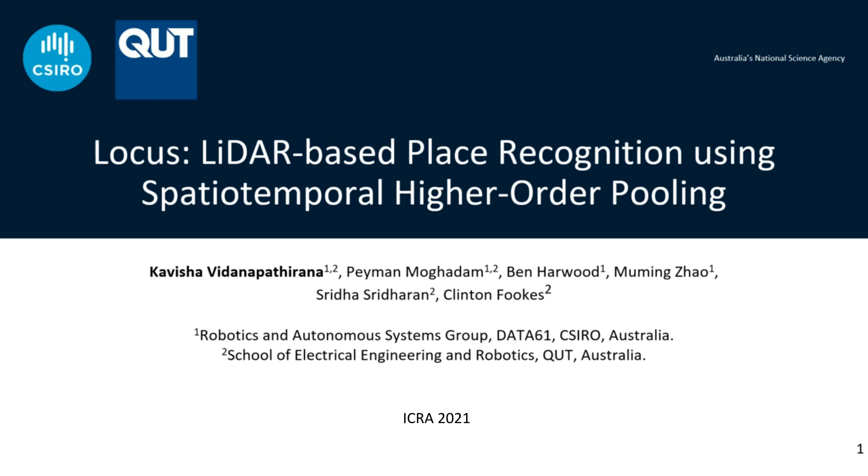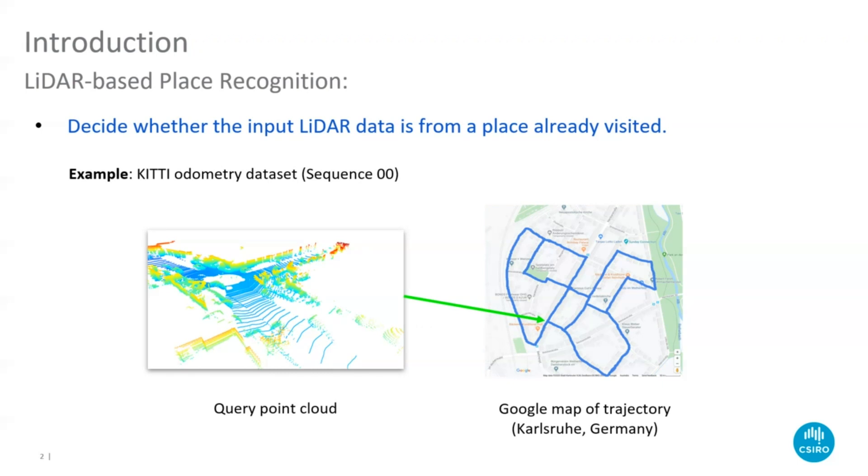This work is done in collaboration with Data61 CSIRO and the Queensland University of Technology. Place recognition aims to associate input sensor data to a map or database of previously visited places. This task of global data association is essential to accurately close loops during simultaneous localization and mapping and also to relocalize within a previously built map without a prior pose estimate.